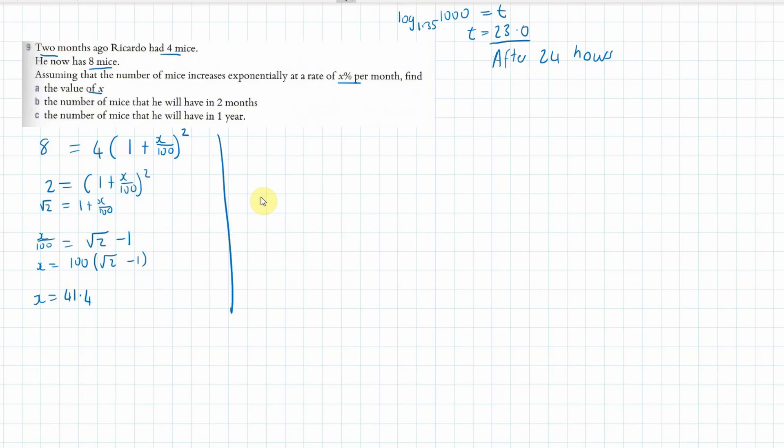Now let's chuck that into part b, the number of mice we'll have in two months. Now that would be another two months from the beginning. So for that I think we're going to go the initial four mice, and then we're going to pop that 41.4, and probably use your unrounded number I would suspect would be better here.